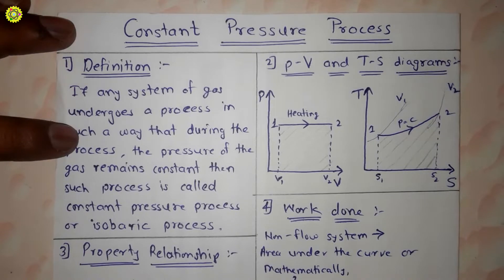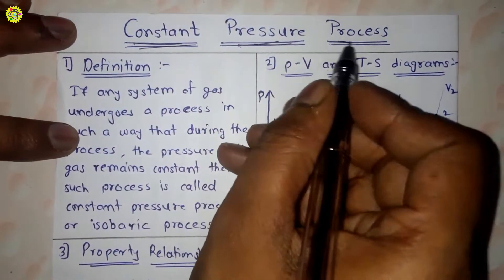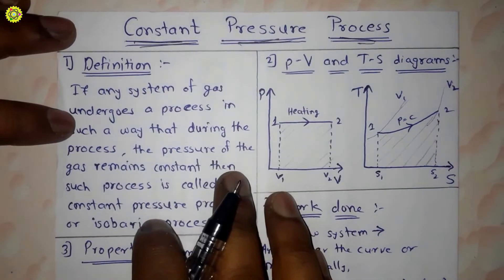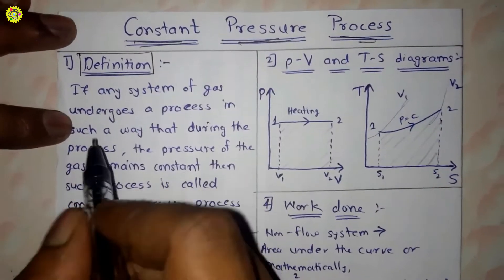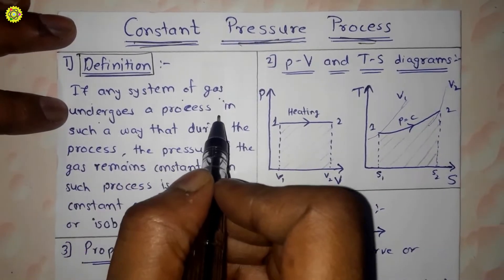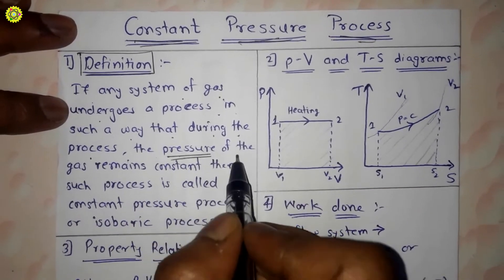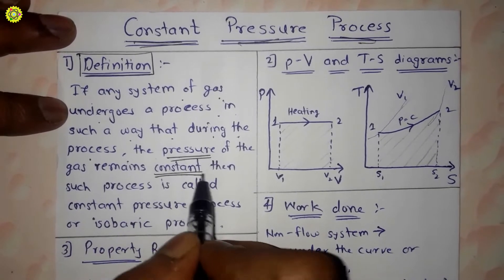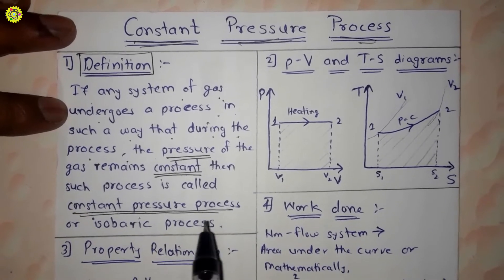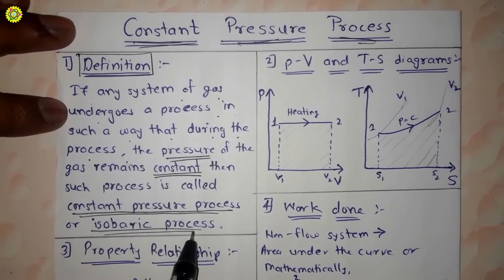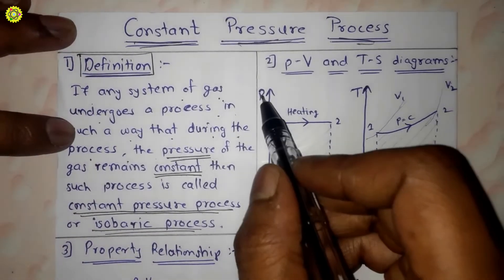Hi students, welcome. In this video we'll study about the constant pressure process. If any system of gas undergoes a process in such a way that during the process the pressure of the gas remains constant, then such a process is called the constant pressure process, and it is also called the isobaric process.